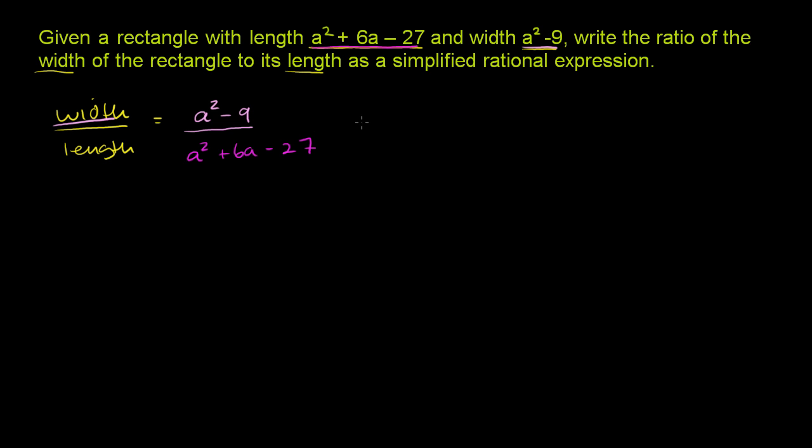If we factor this top expression, which was the expression for the width, this is of the form a² - b², where b² is 9. So this is a + 3 times a - 3. If you see something a² - b², it's (a + b)(a - b). You can verify that for yourself by multiplying it out. The width can be factored into (a + 3)(a - 3).